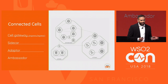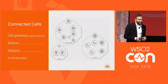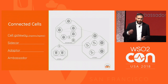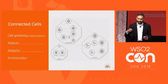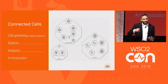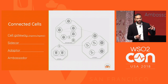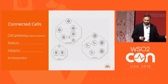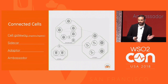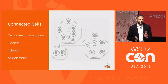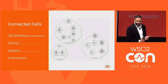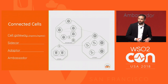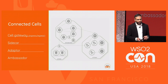Communication between cells happens through the cell gateway — always as ingress or egress communication. In addition, if a service needs to communicate outside the cell, such as calling a SaaS application or a database, you can use container patterns like a sidecar, adapter, or ambassador to handle that communication outside from the cell.